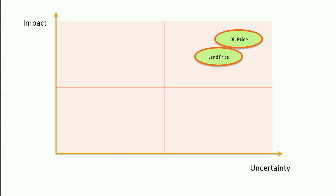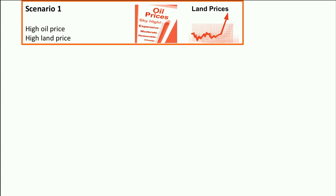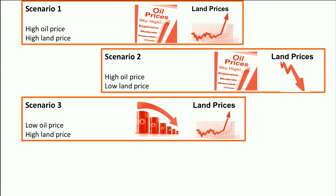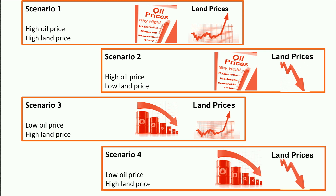Based on these two factors, I will consider four scenarios. Scenario 1 has a high oil price and the prices for land are also high. In Scenario 2 the oil prices are high as well, but buying land to build on is more profitable than in Scenario 1. In the third possible scenario, the oil price is low and driving a car is therefore very attractive; however, the land prices are high. A final scenario has both the oil price and the land prices low.